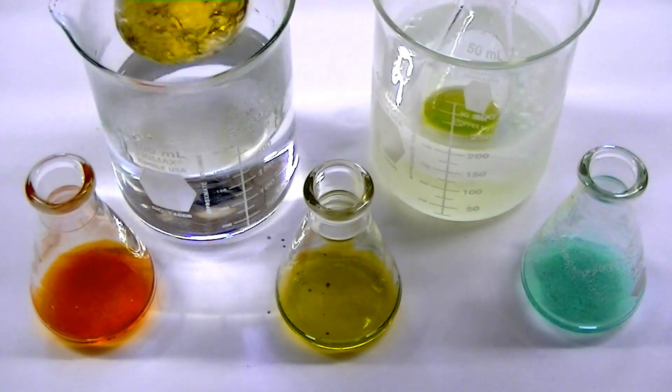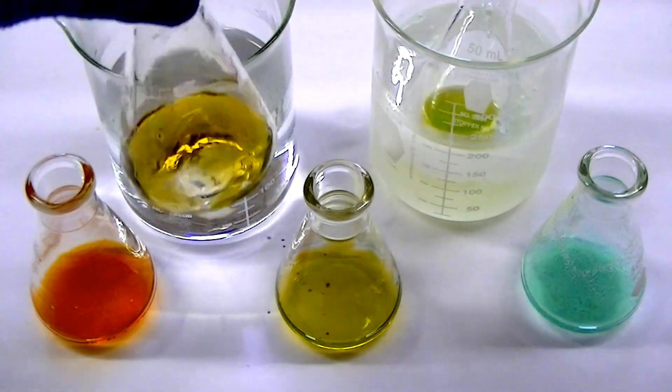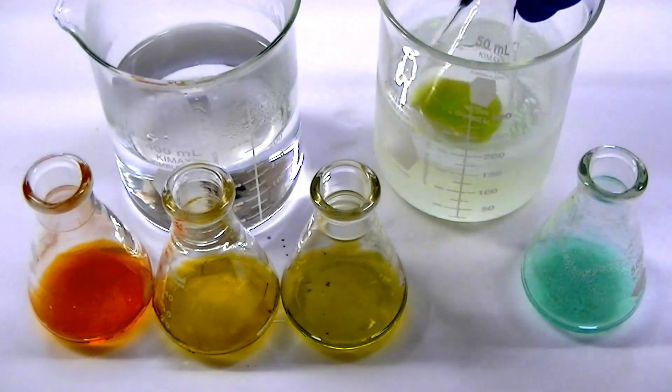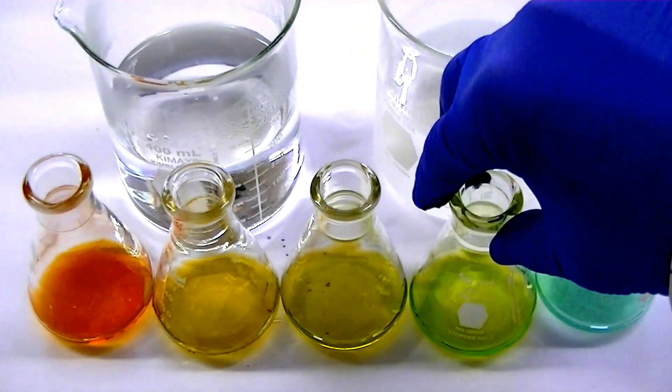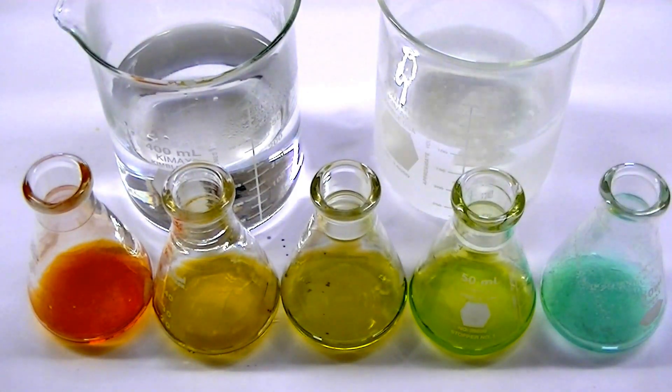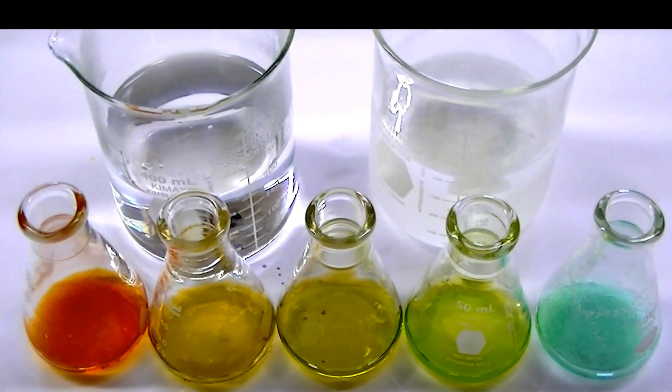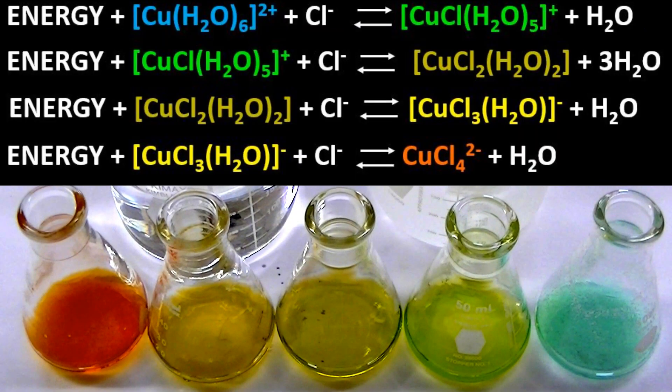So we see how we can use our knowledge of chemical equilibria to generate orange, yellow, yellow-green, green, and blue-colored solutions. In conclusion, let's take one more look at all of the chemical equilibrium equations that allowed us to generate these beautiful colors.